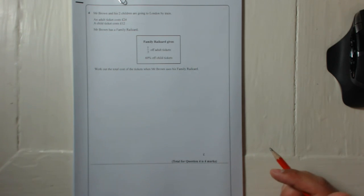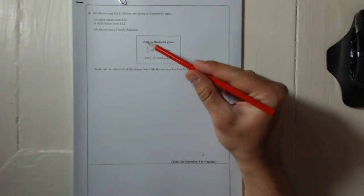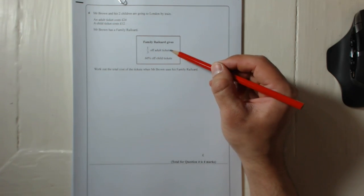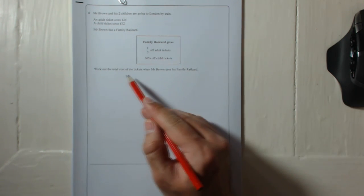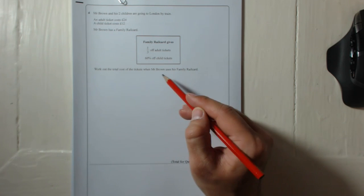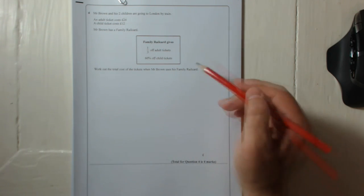Mr. Brown and his two children are going to London by train. An adult ticket costs £24, the child ticket costs £12. Mr. Brown has a family rail card. The family rail card gives a third off adult tickets and 60% off child tickets. Work out the total cost of the tickets when Mr. Brown uses his family rail card.